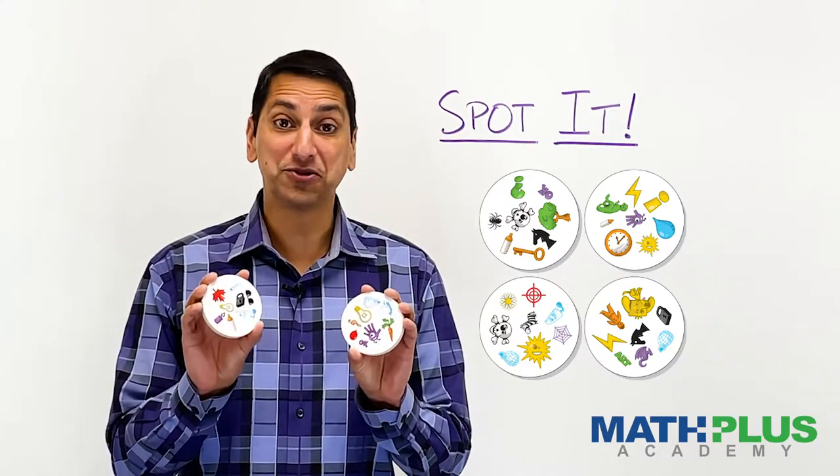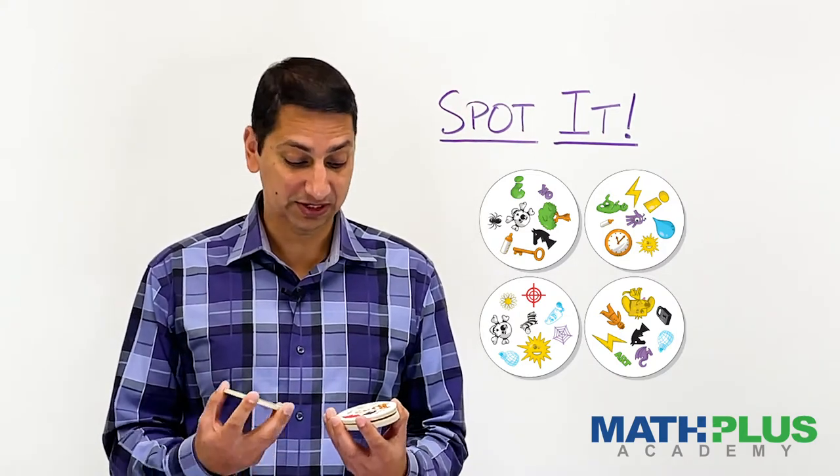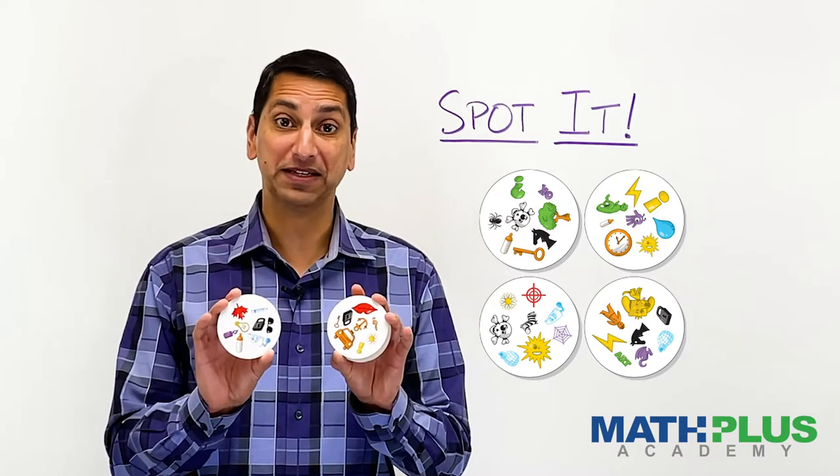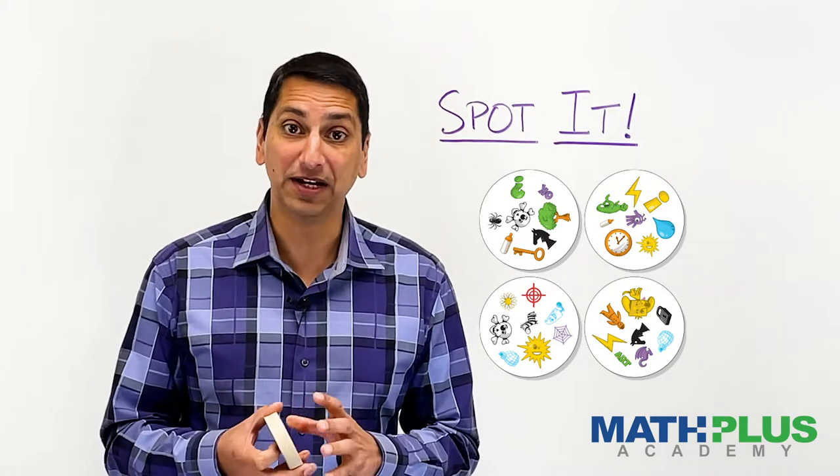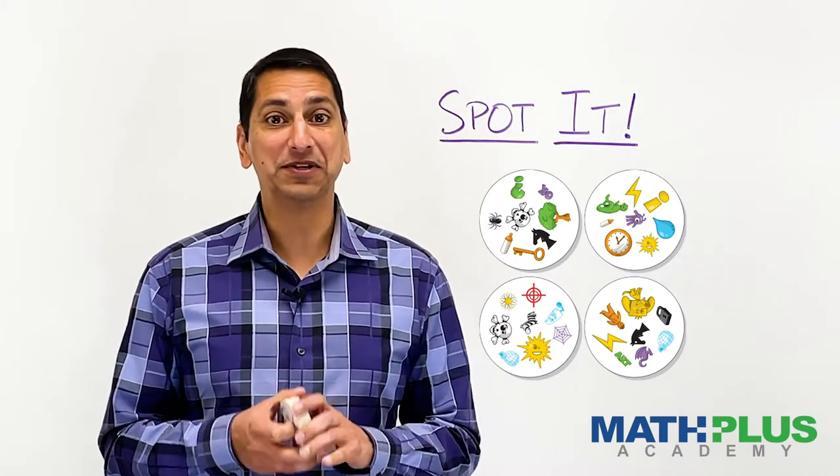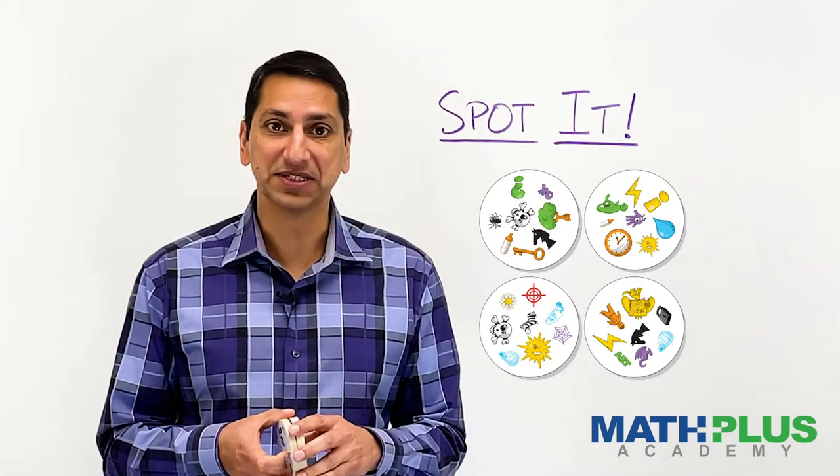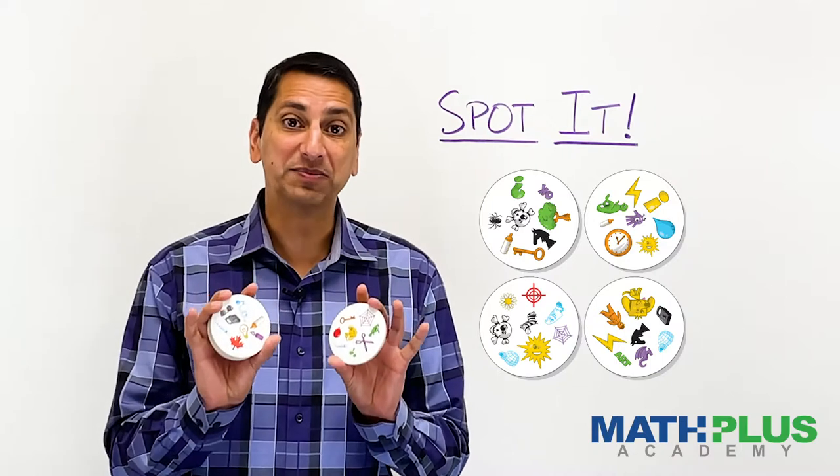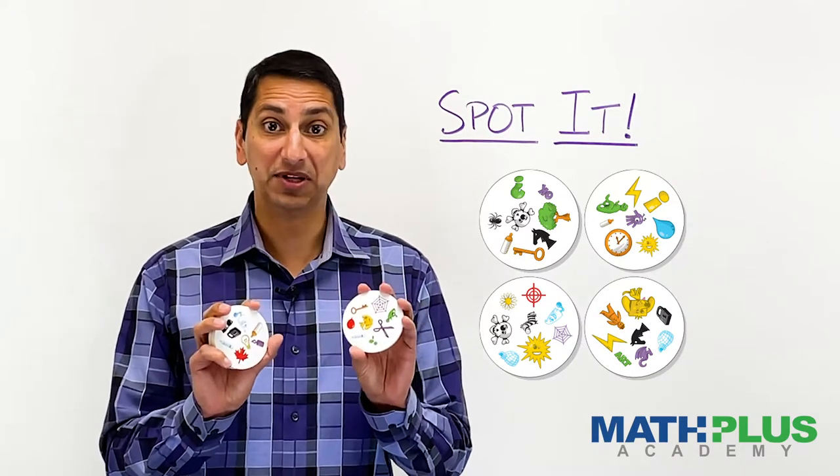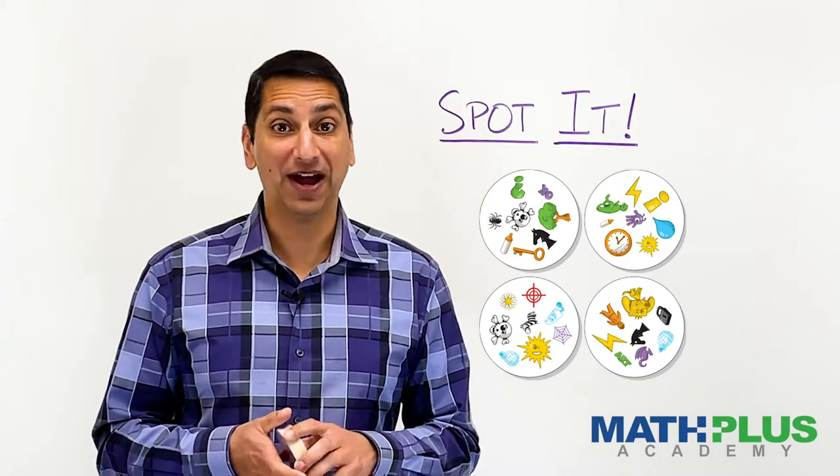And that's true of every single set of cards that you can pick out in this deck. If I pick these two, I will find something that matches. So you can play this game, it's a lot of fun, but for me it really begs this question of how did they even make this thing? How magical is this that no matter what I pick out of here, I will always be able to find one symbol on here that is also on here? That's fascinating to me.